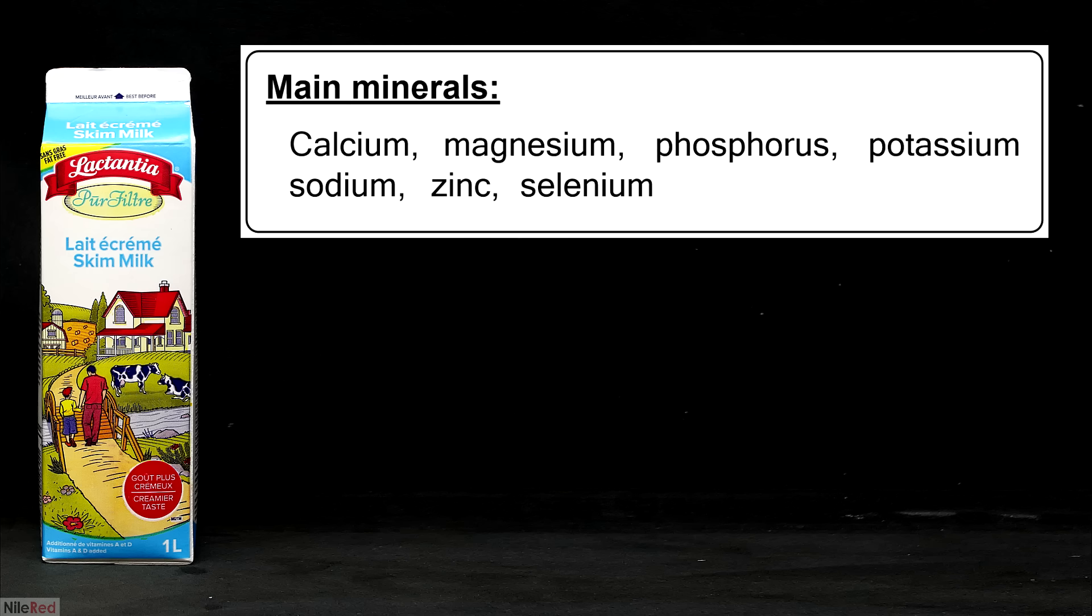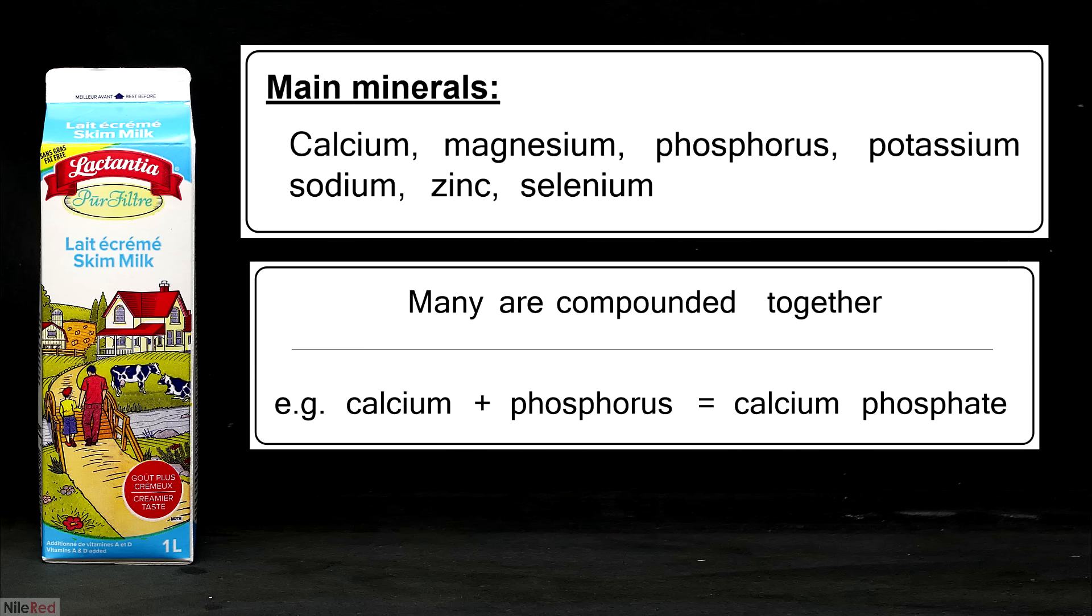Milk is a good source of minerals, and I've listed the major ones here. Many of them are present as salt compounds, for example calcium phosphate, which is a combination of calcium and phosphorus. A large portion of the minerals are associated with the casein proteins, and the rest are dissolved in the water.